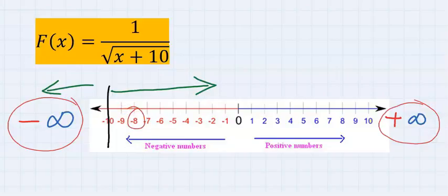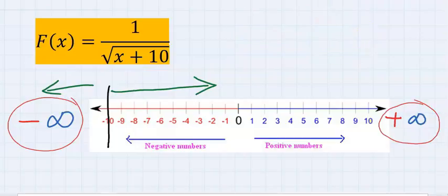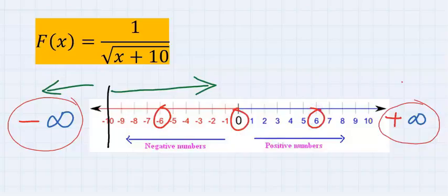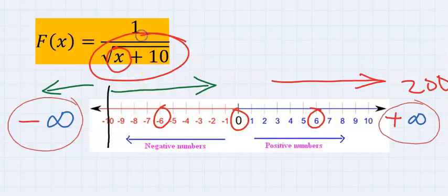We are going to put minus 8 for x and we are going to still get a positive. Next, we can try minus 6, or 0, or 6, even 200. As we keep moving towards this direction, you are going to observe that we are not going to have any problem with x at the denominator.